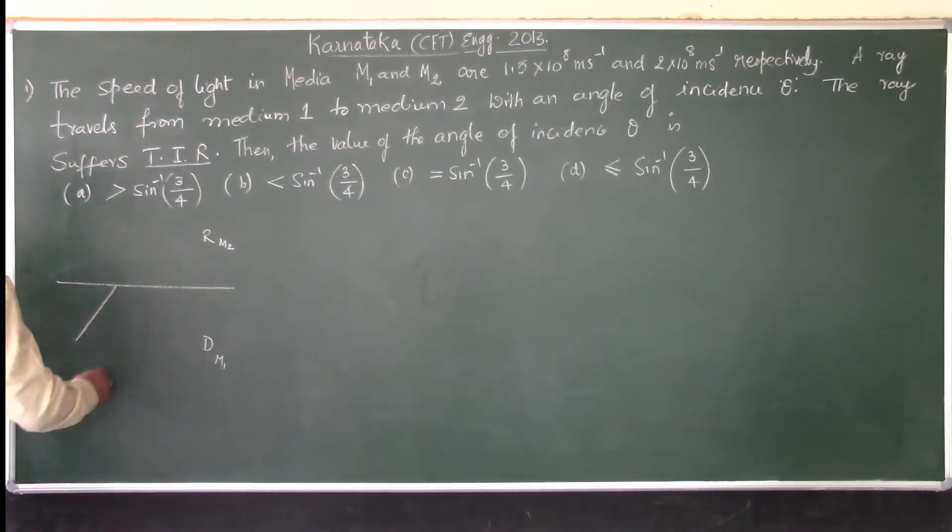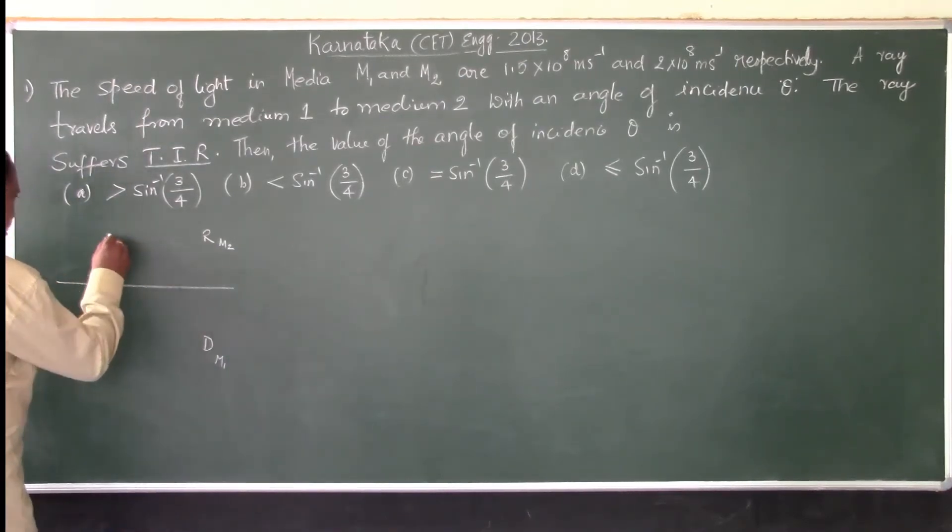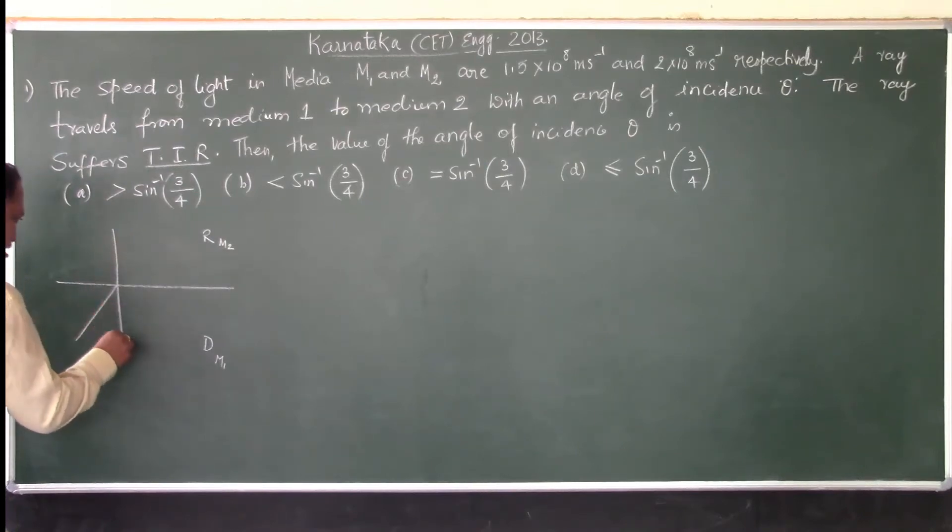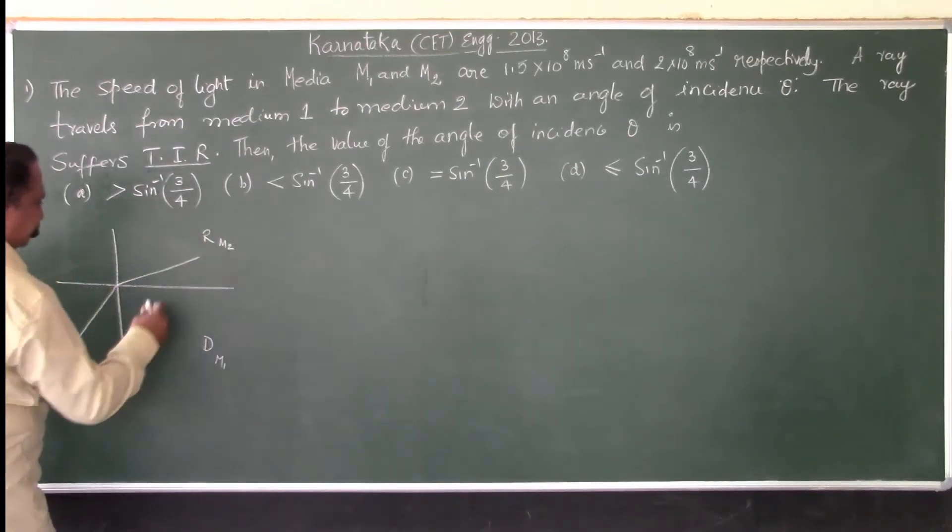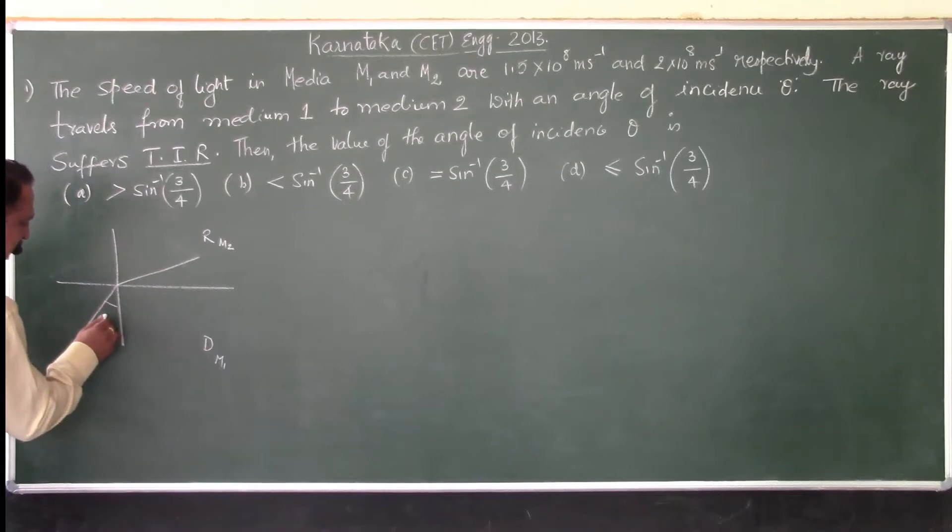Now, let us say this is the ray of light and I draw the normal at the point of incidence, it bends away from the normal. So, this is the angle of incidence in the denser medium.